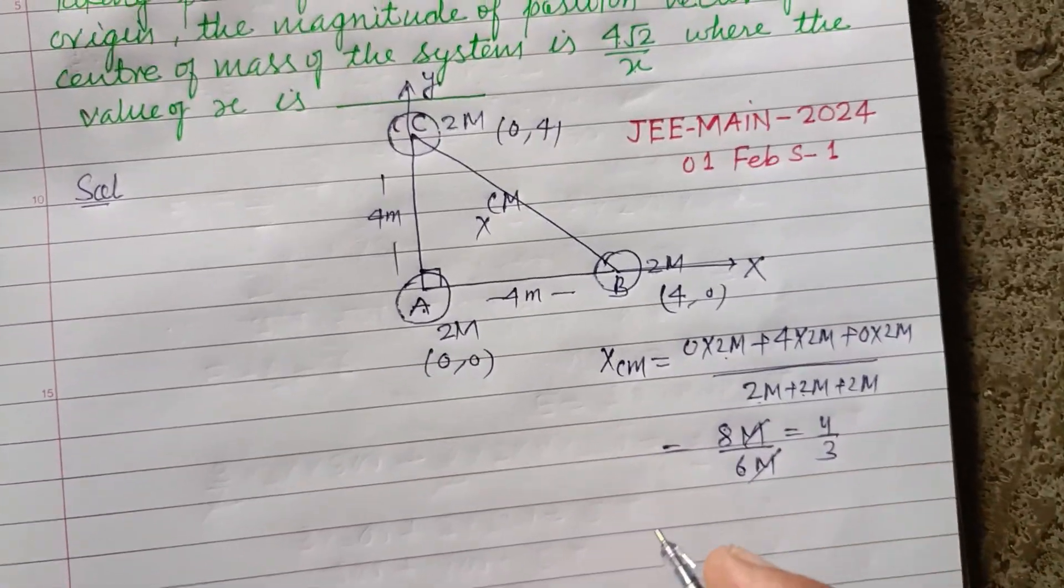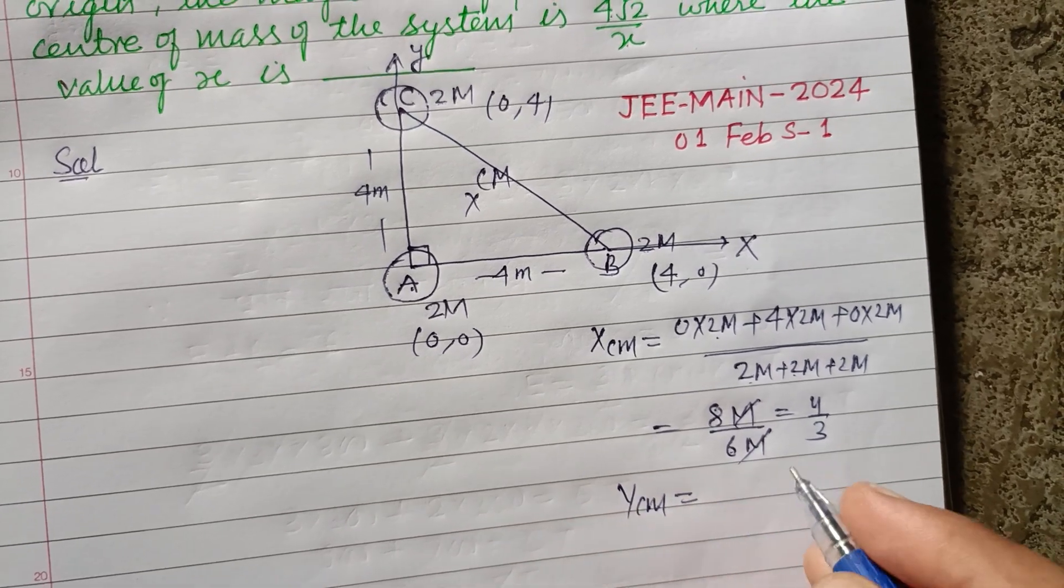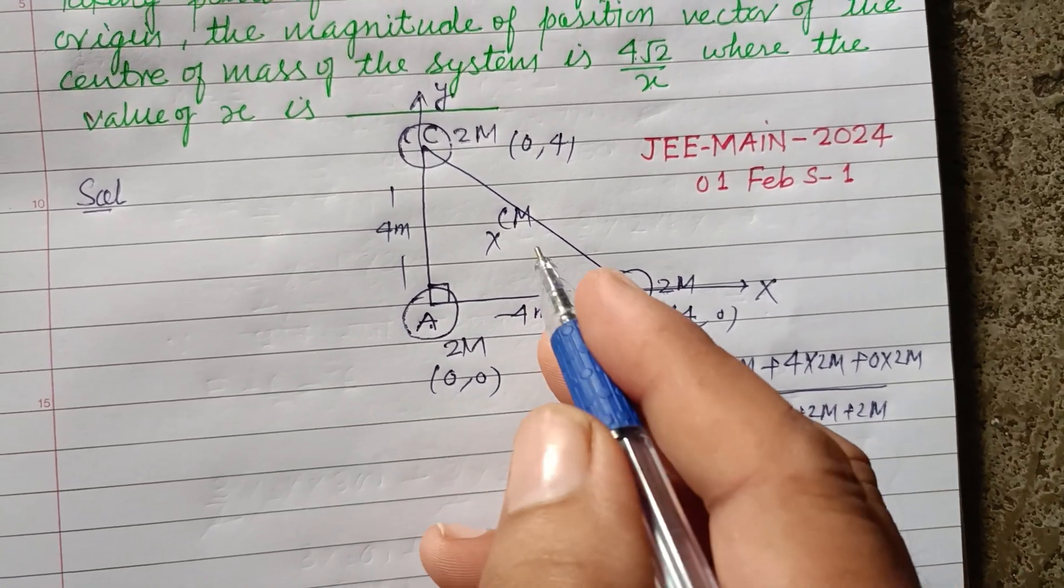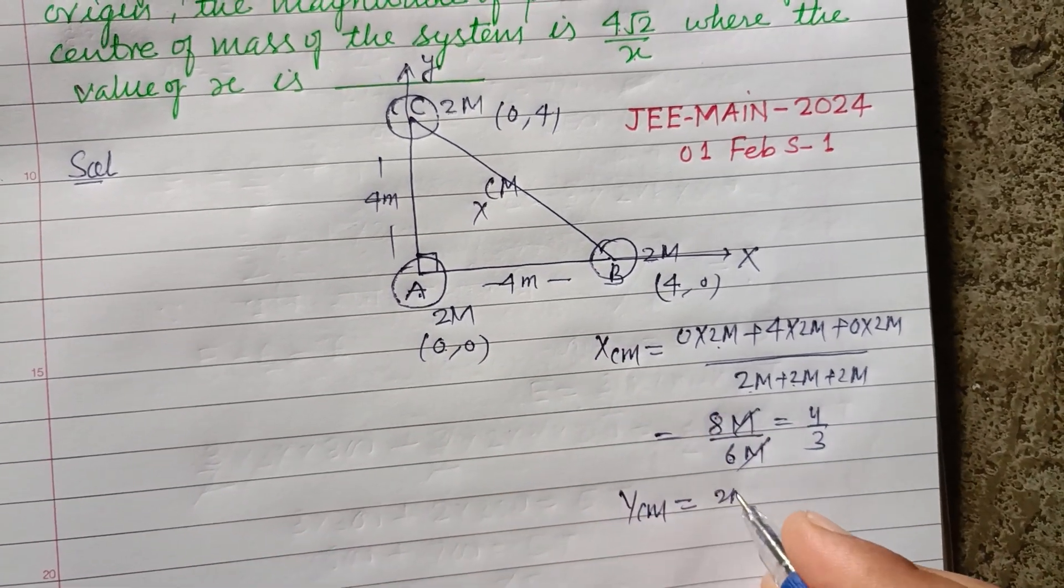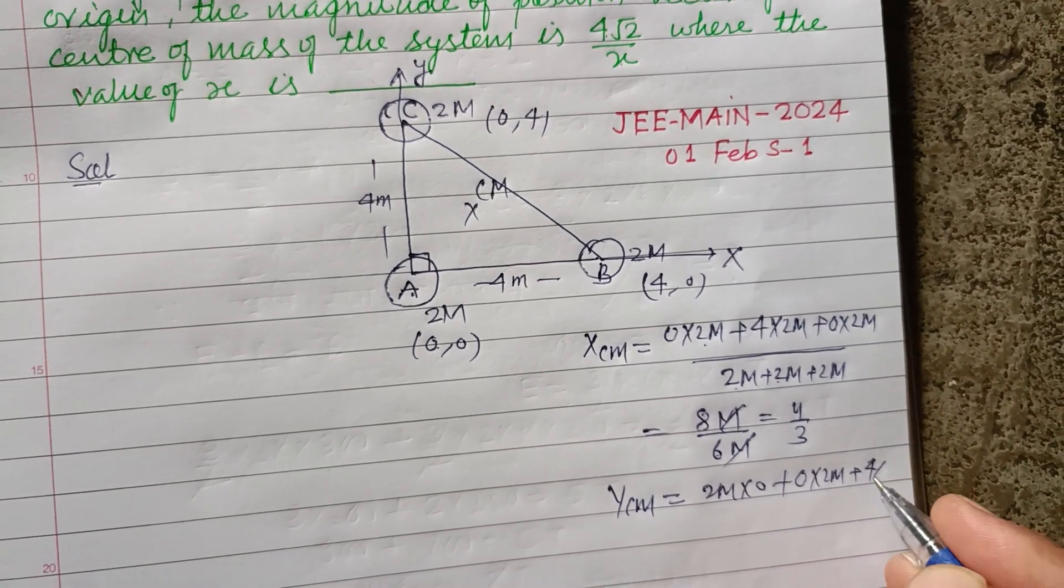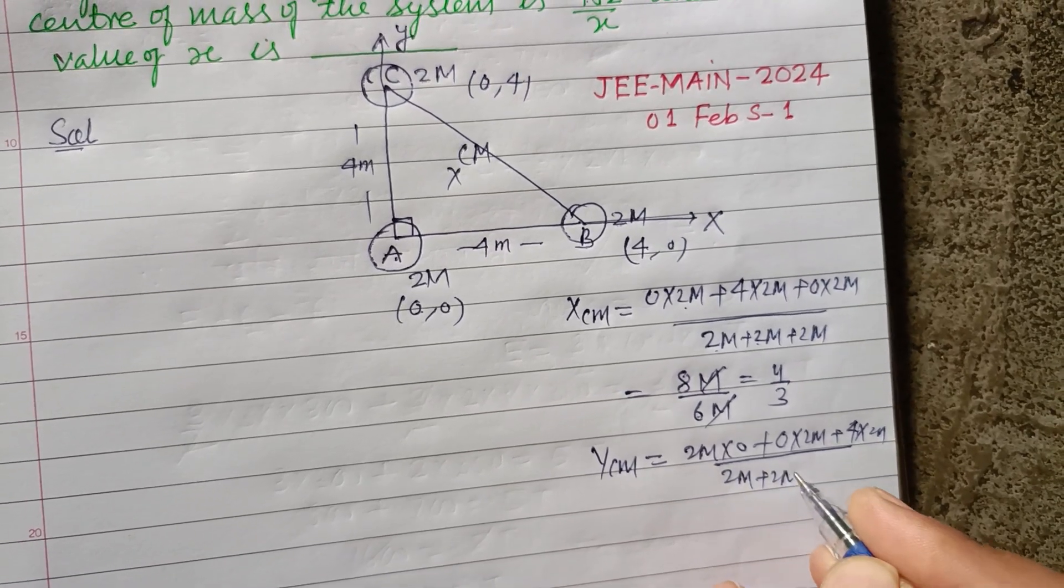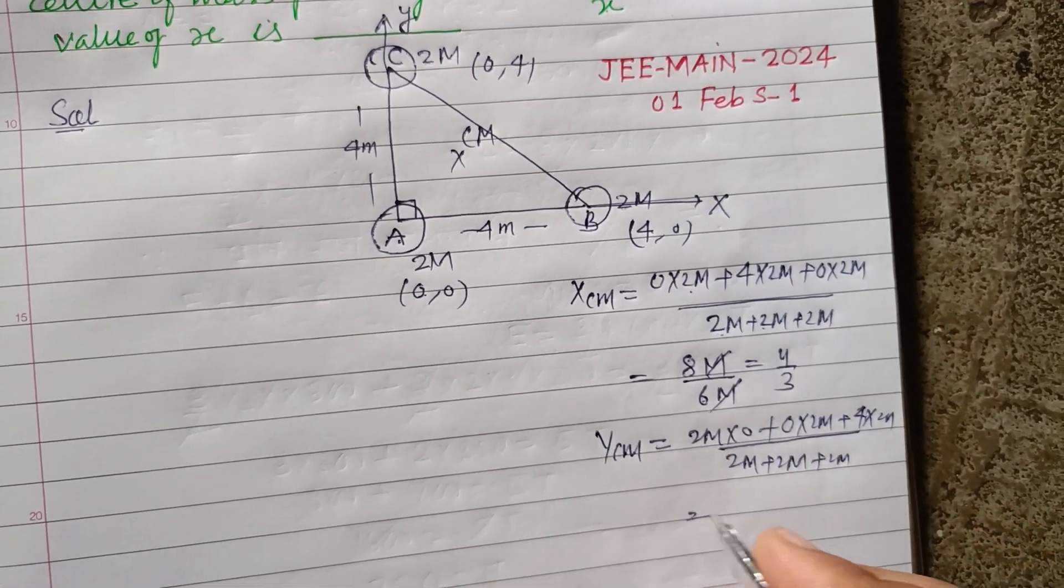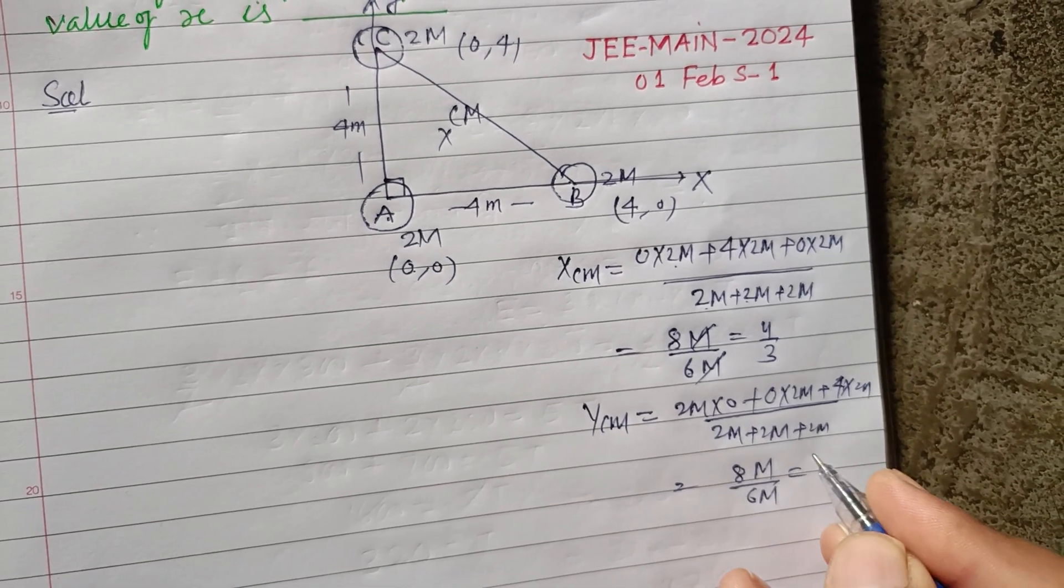And y-coordinate of CM, center of mass, is: (0×2m + 0×2m + 4×2m)/(2m + 2m + 2m). This is again 8m upon 6m, this is 4/3.